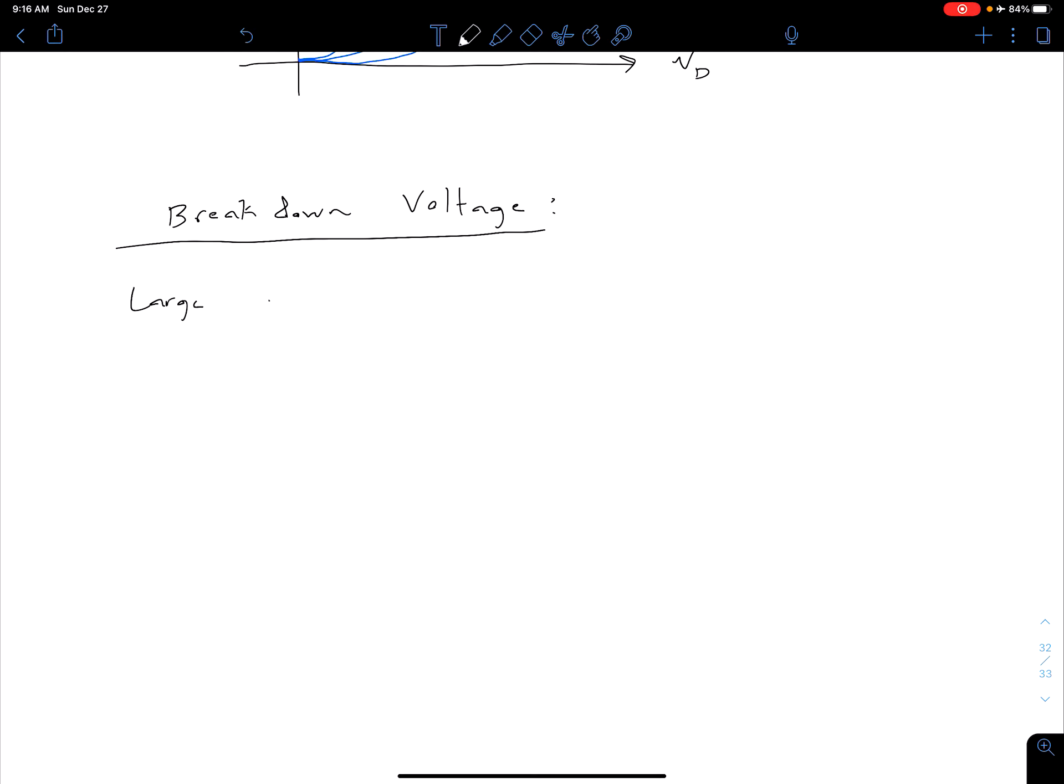To put some names with common mechanisms: the one I was describing earlier is called avalanche breakdown. As the name implies, we have some high energy electron which breaks off a couple other electrons, and then each of these electrons can break off a couple more electrons. You can see where this is going in terms of this avalanching effect that started with one and leads to higher currents.